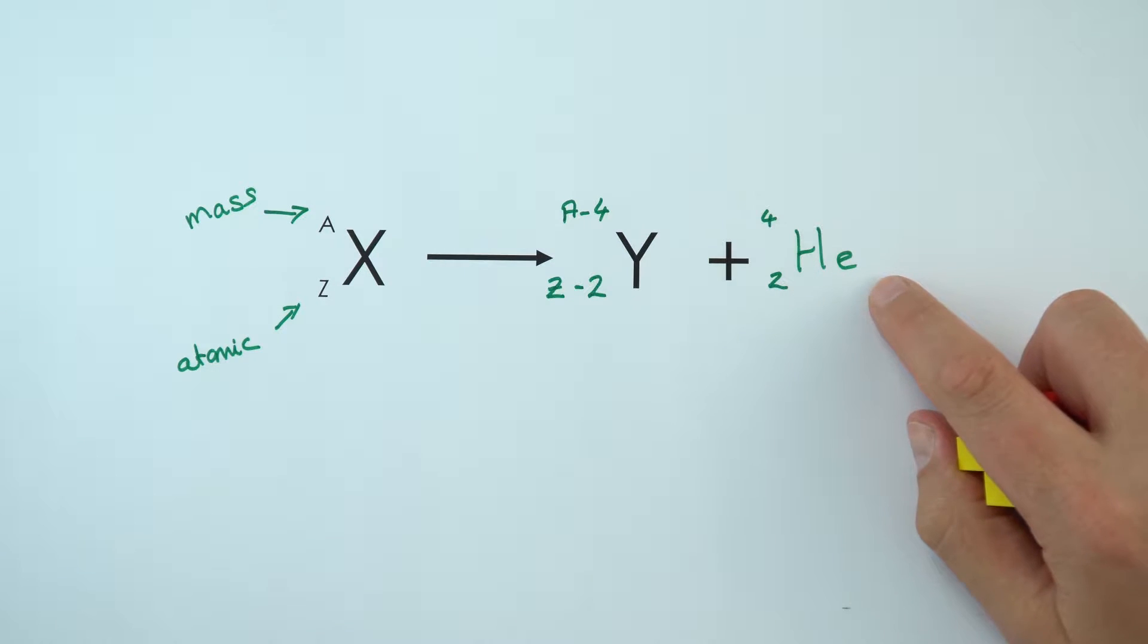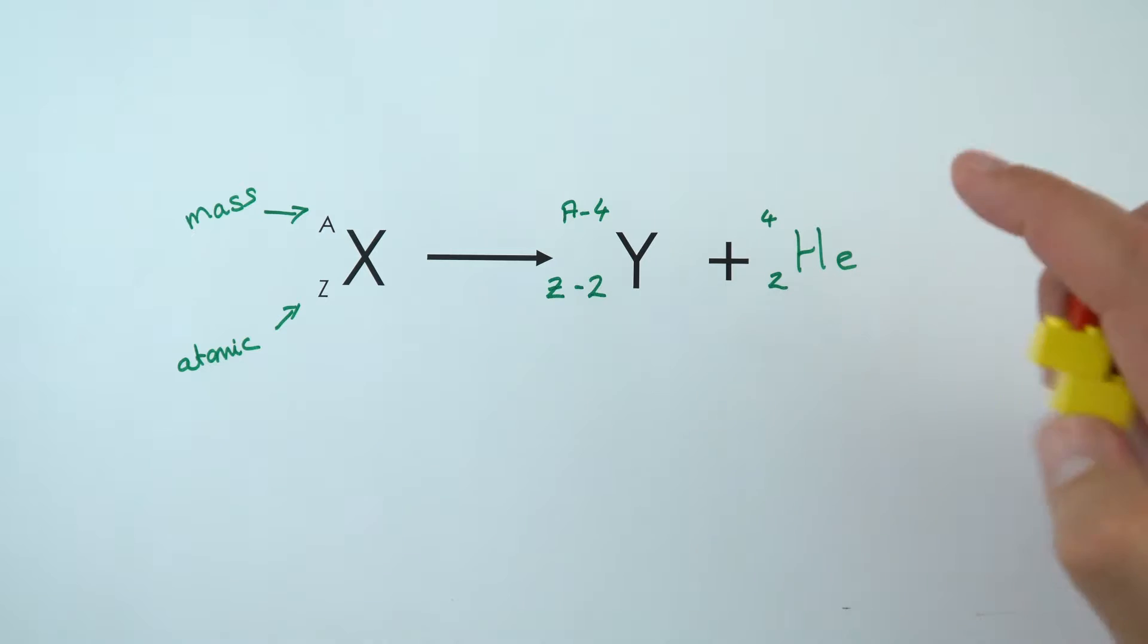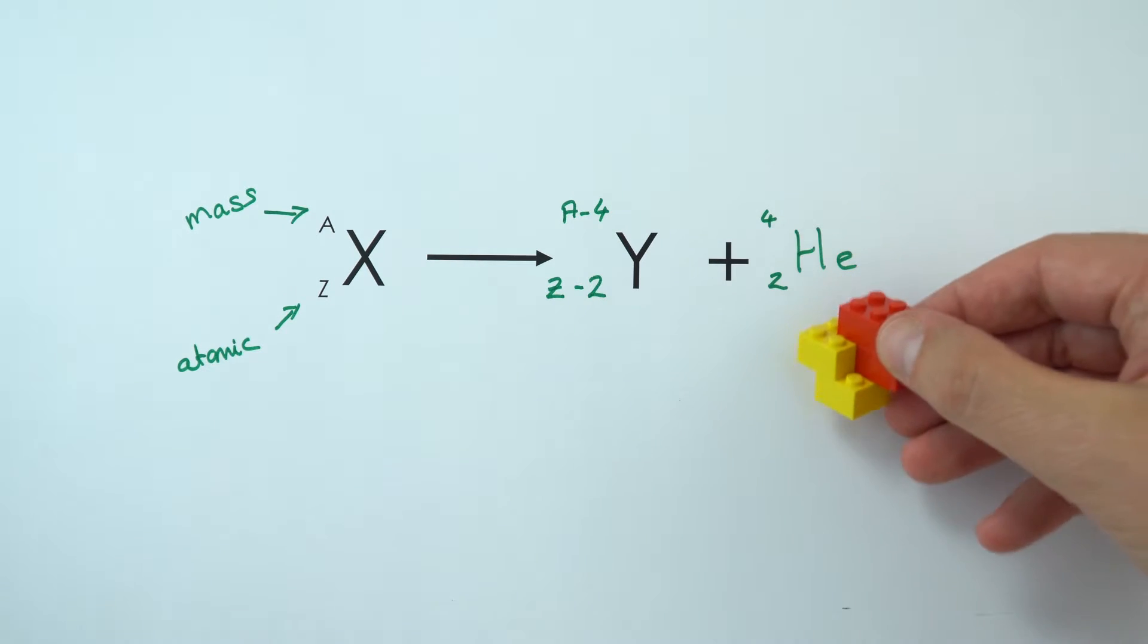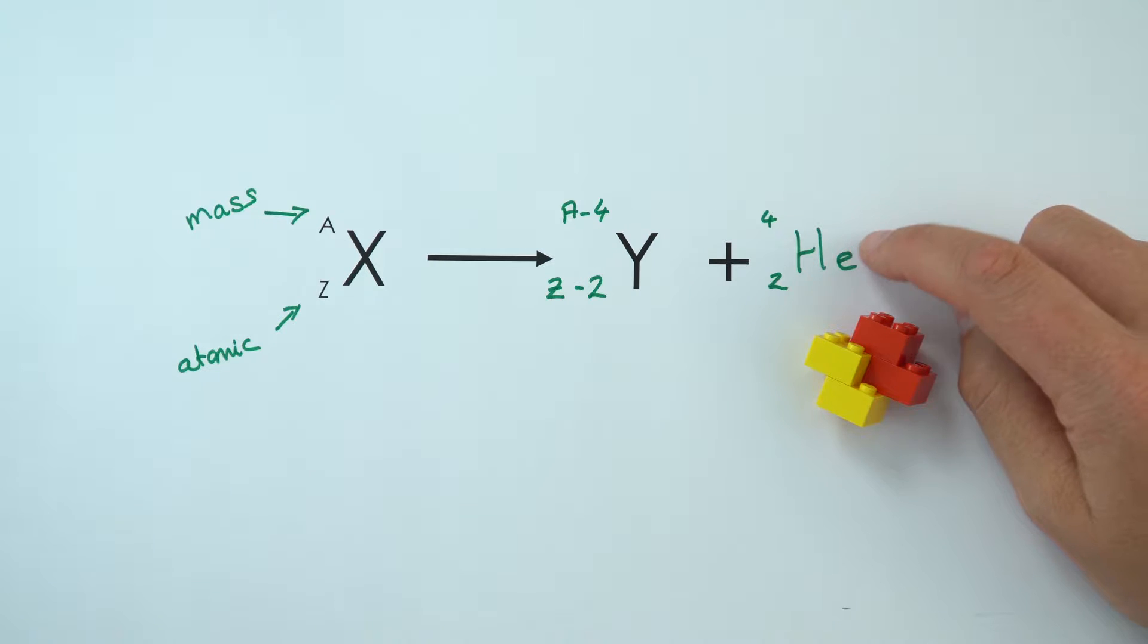Sometimes we show this as an alpha symbol to be the alpha particle, but because it's the same as a helium nucleus—just two protons and two neutrons—that's why we can often give it the symbol He in our equations.